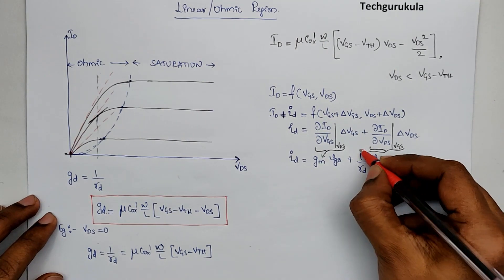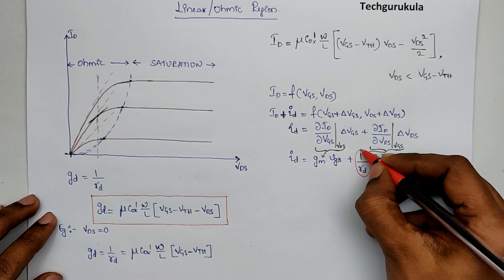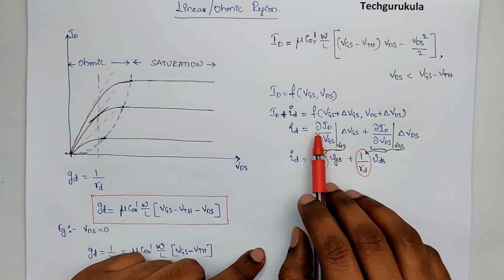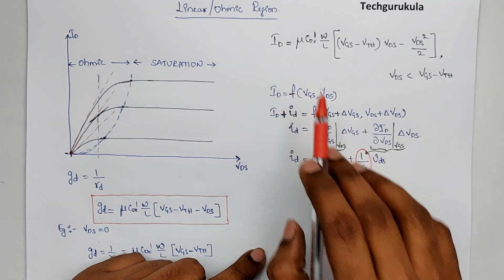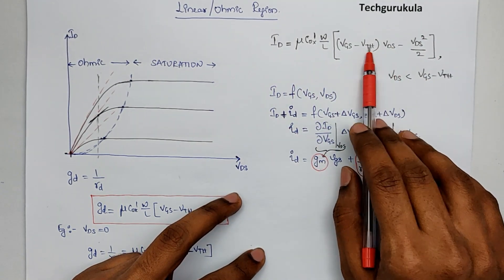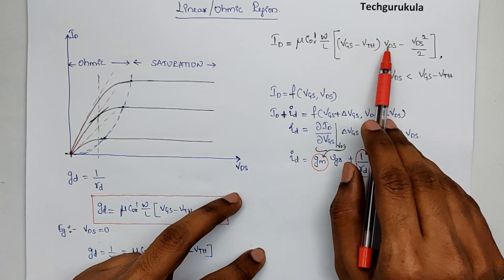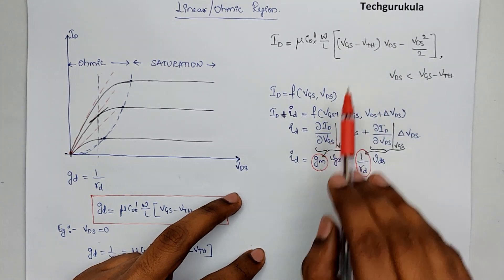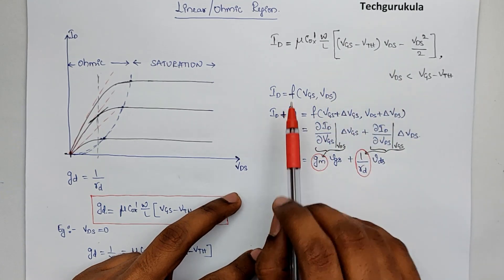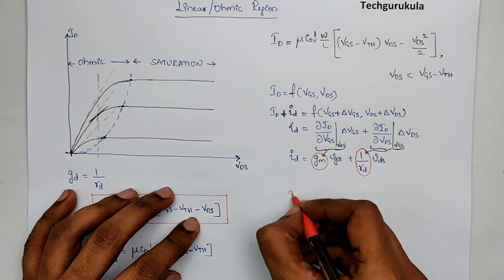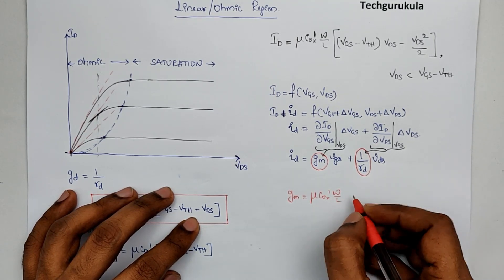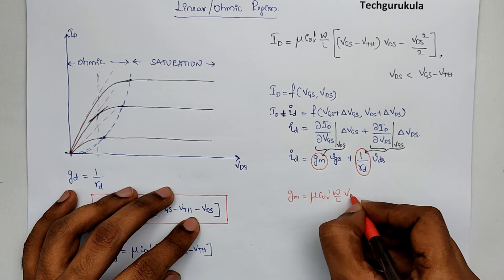Now, as we have seen this value, which is GD equal to 1 over RD. Now, let's move on to GM. GM is partial differentiation of ID with respect to VGS. When we differentiate this, this term would become 0 and this term would be 0. Only this term would be there, where delta VGS, we get this entire term would become VDS once we differentiate. So we can write GM is equal to mu C ox prime W by L times VDS.